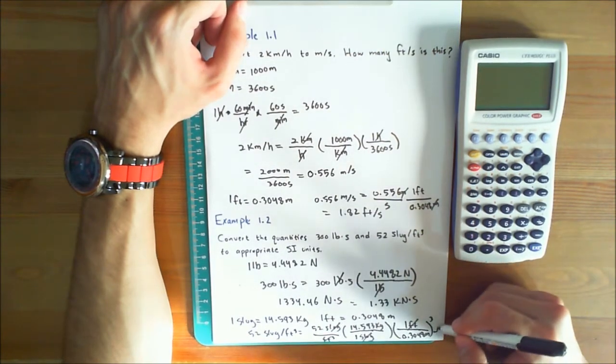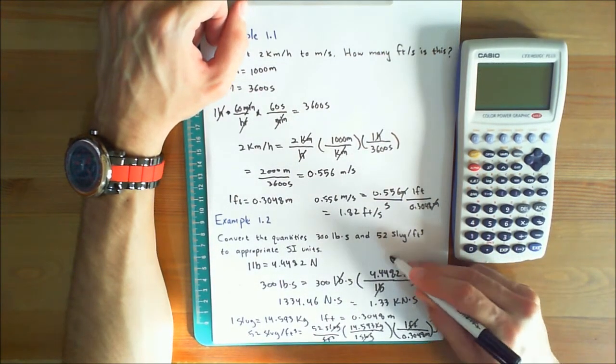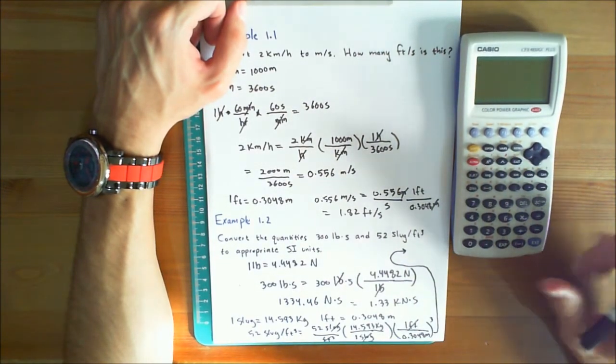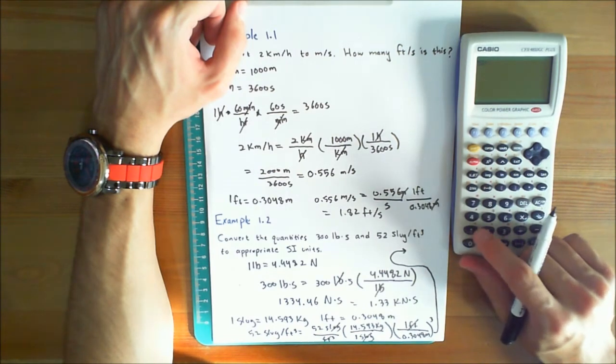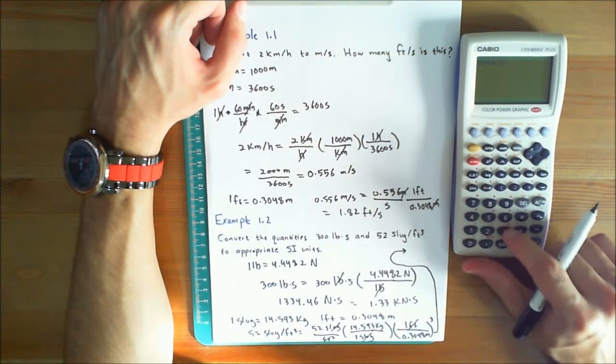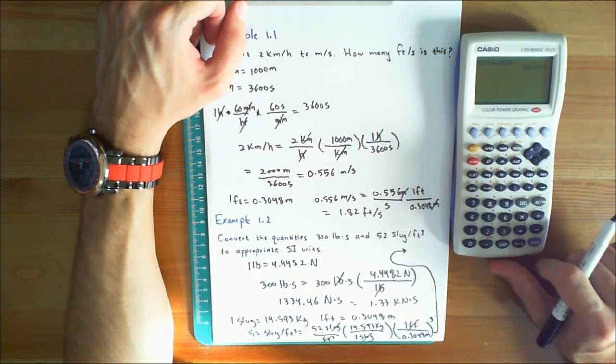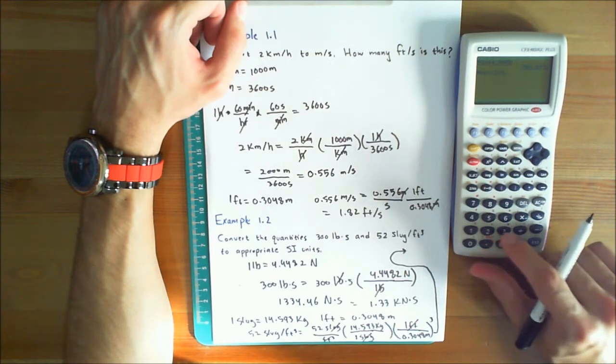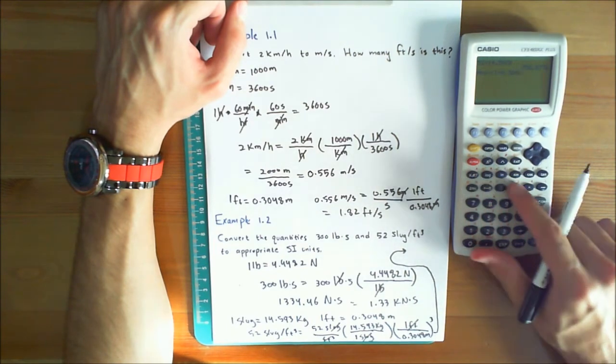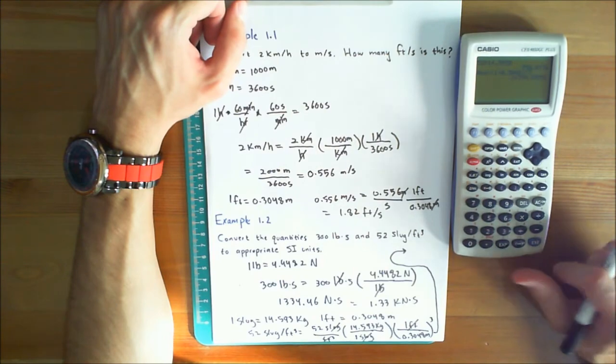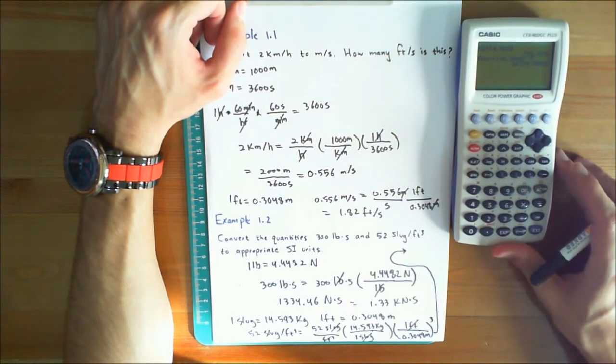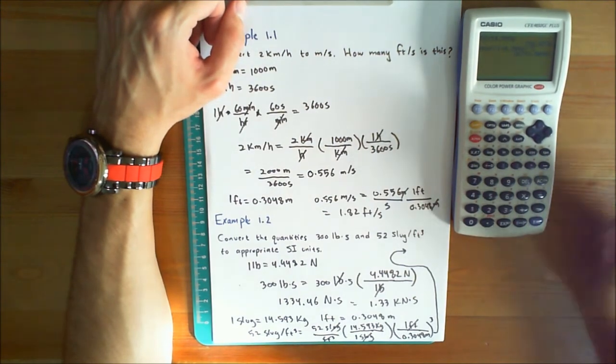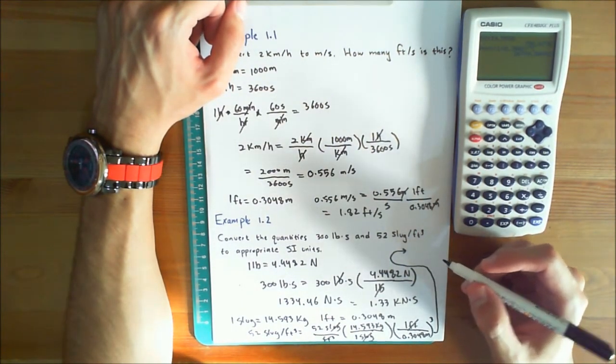And the final answer would give you, let's put that one space over here, but the final answer would be 52 times 14.593 times 1 over 0.3048 cubed, 26,799.5.